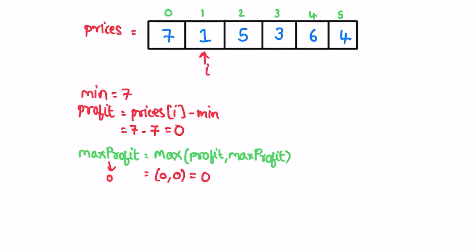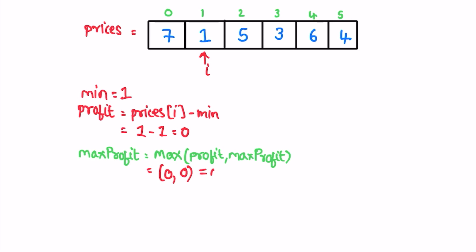Next iteration: i is pointing at 1. We compare with the existing minimum — 1 is less than 7, so we update minimum to 1. The current profit is 1 minus 1, which is 0, and max profit stays 0. Next iteration: i is pointing at 5. 5 is greater than minimum so min stays at 1. The current profit is 5 minus 1, which equals 4.